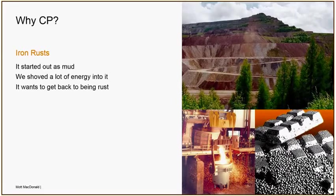Why do we need cathodic protection? Effectively it's because iron rusts. Fundamentally, electrochemically, thermodynamically, it doesn't want to be steel. It started life as a big mound of brown mud — structurally we can't do much with a big mound of brown mud — so we stick a load of energy into it and make it into steel. But effectively all it wants to do is turn back to being rust and brown mud.